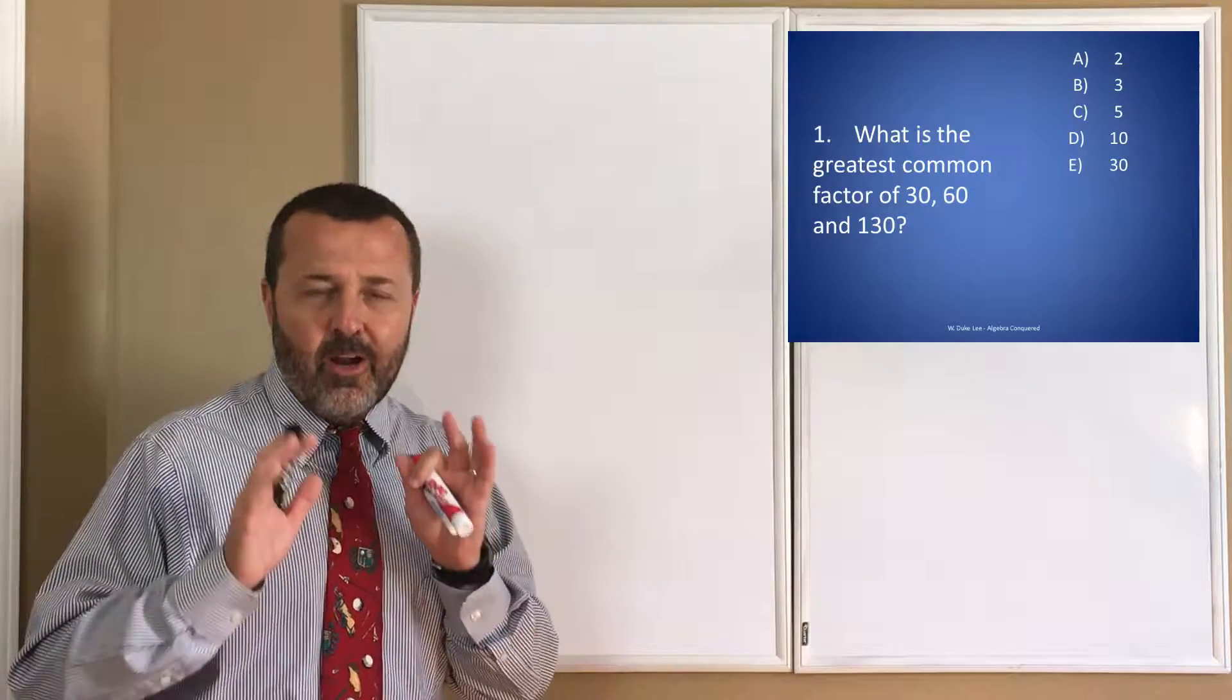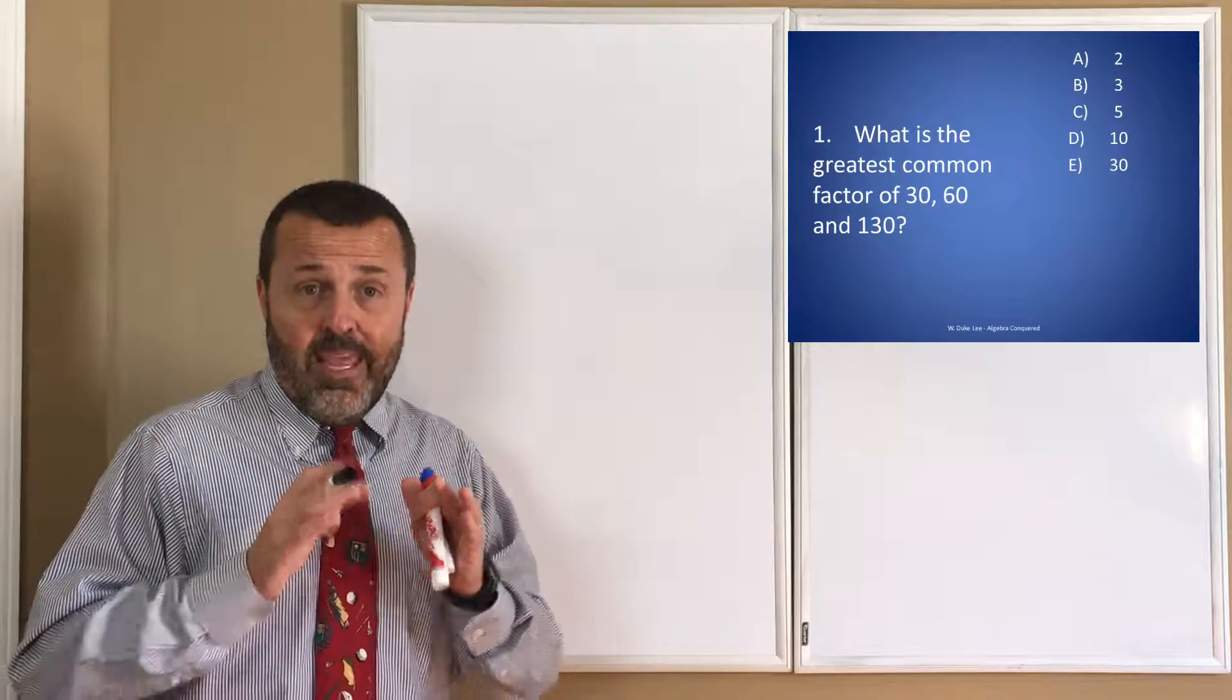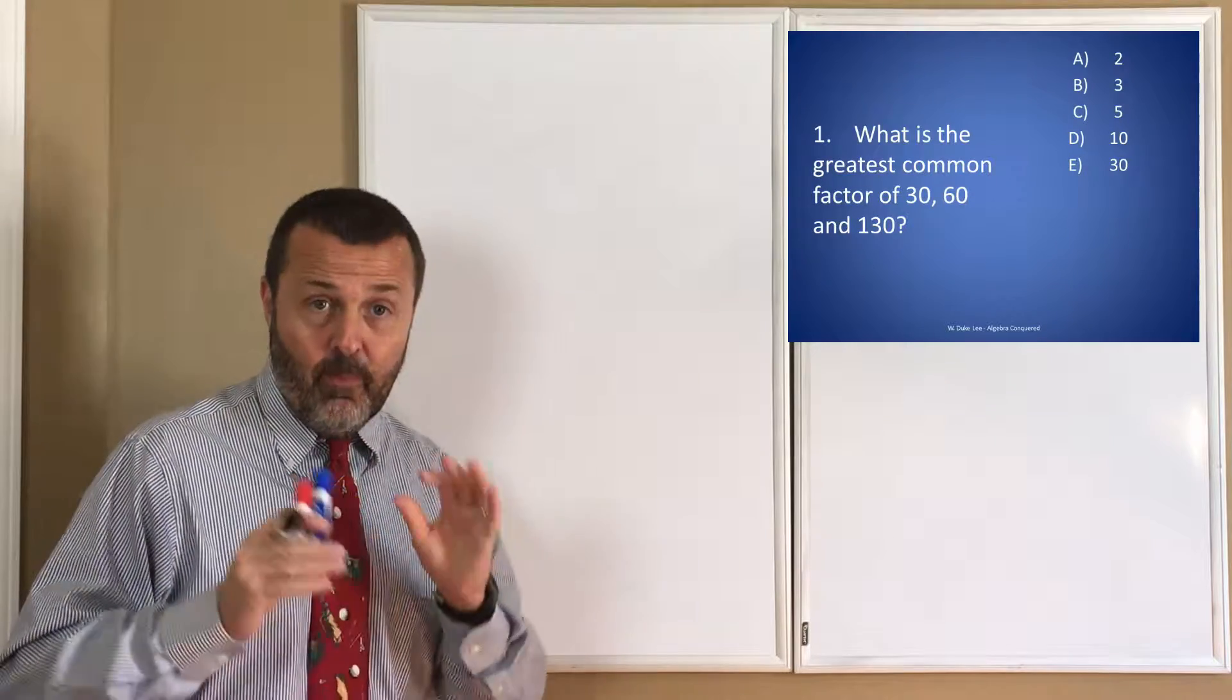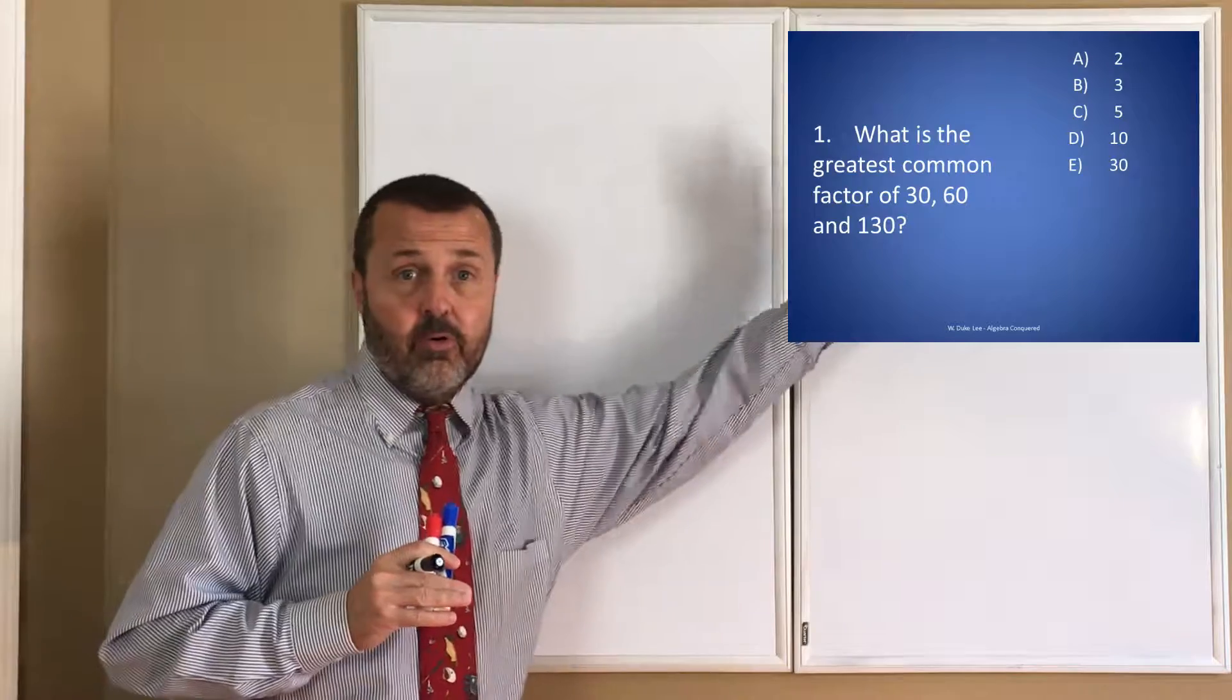We're talking about greatest common factors for three numbers: 30, 60, and 130. We've got to find the GCF of those three numbers.